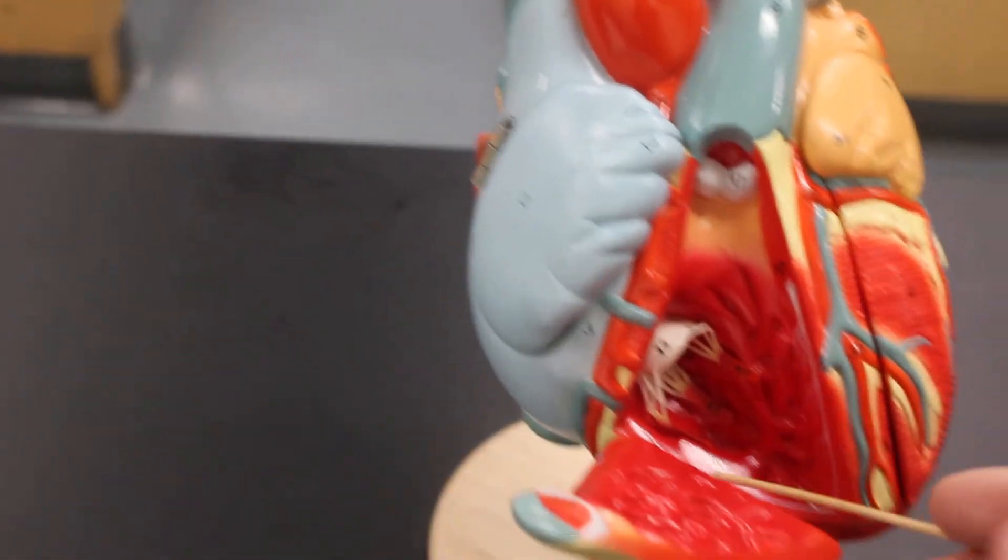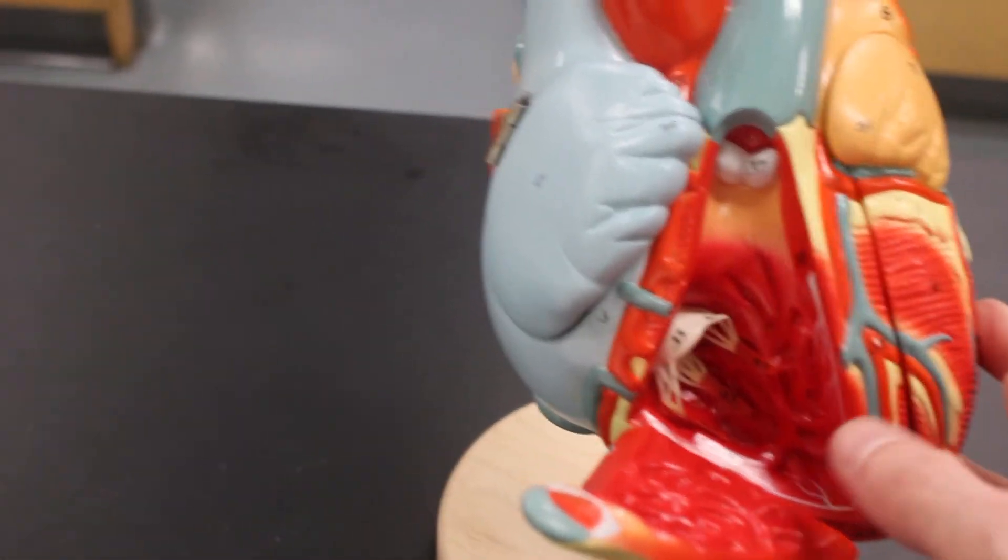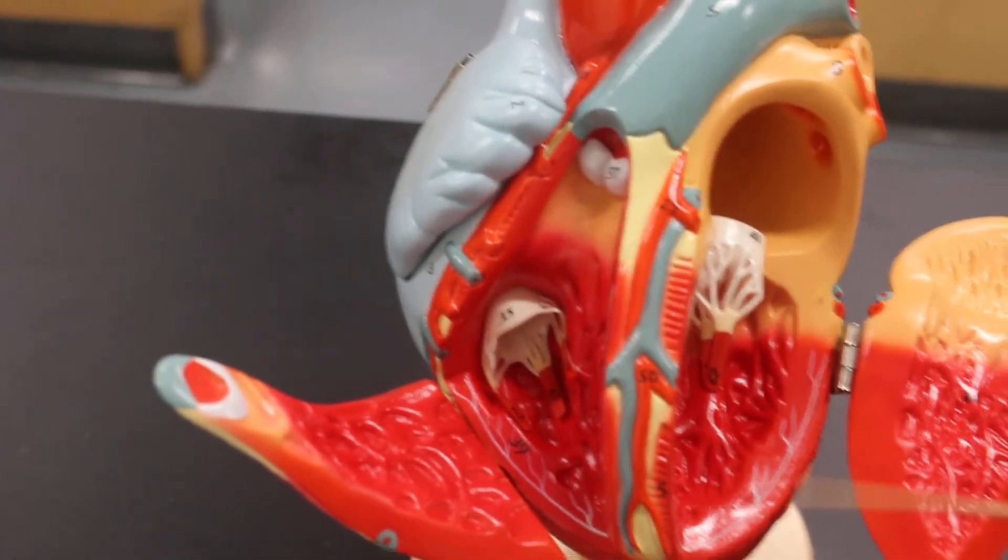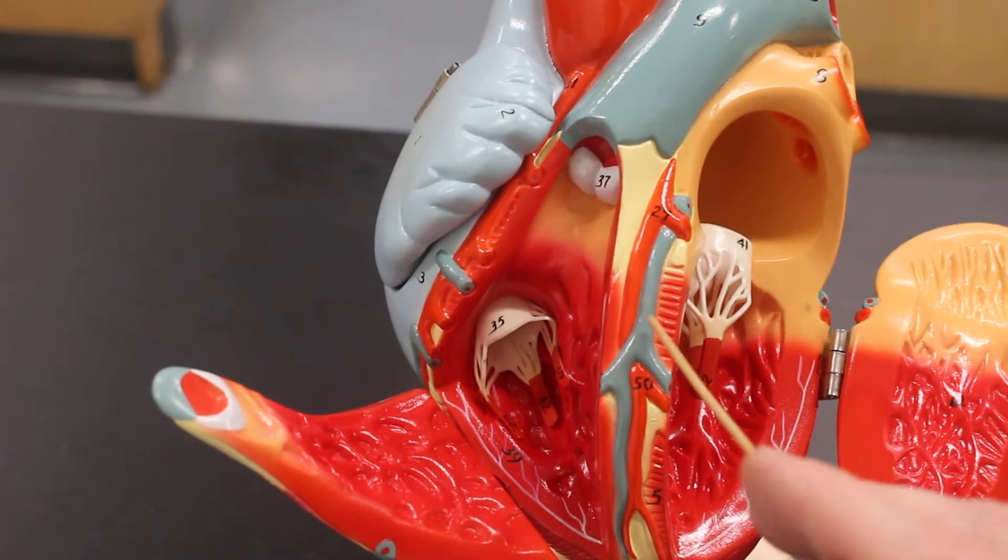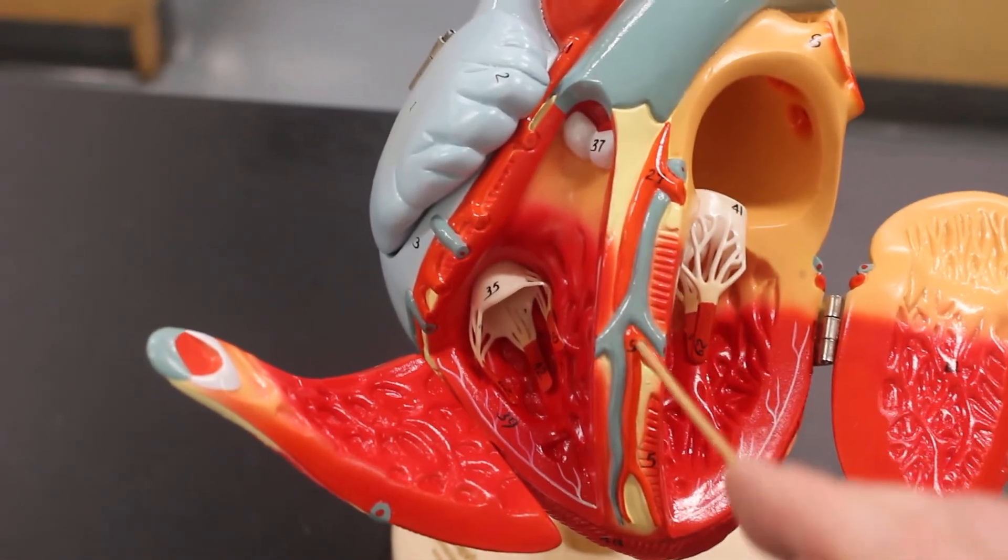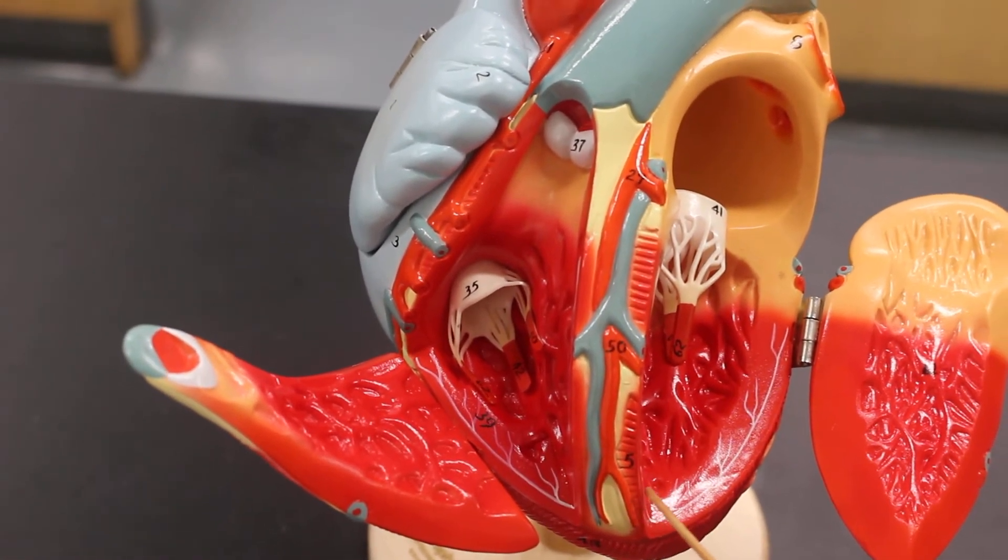Down here is the right ventricle. Over here is the left ventricle. This whole space is the left ventricle, right ventricle. Between them this wall here is the interventricular septum.